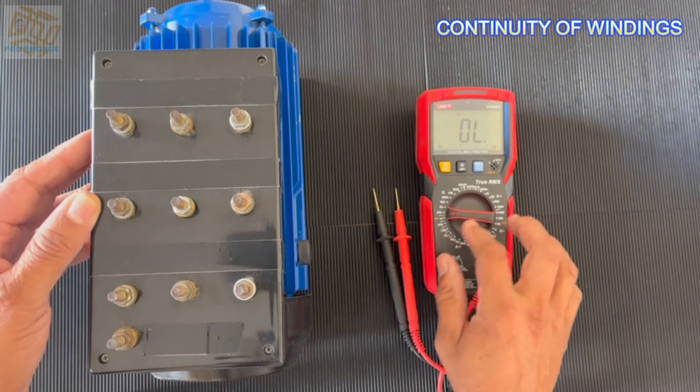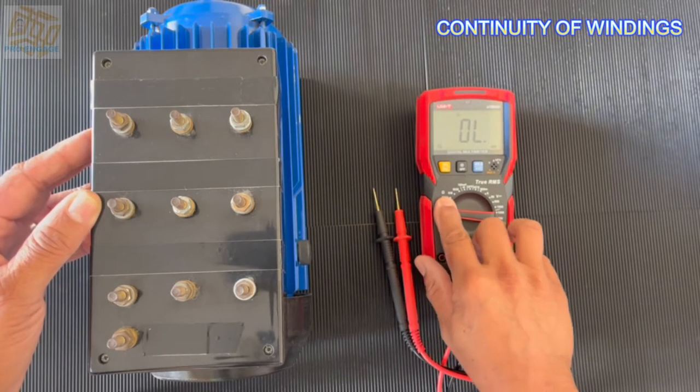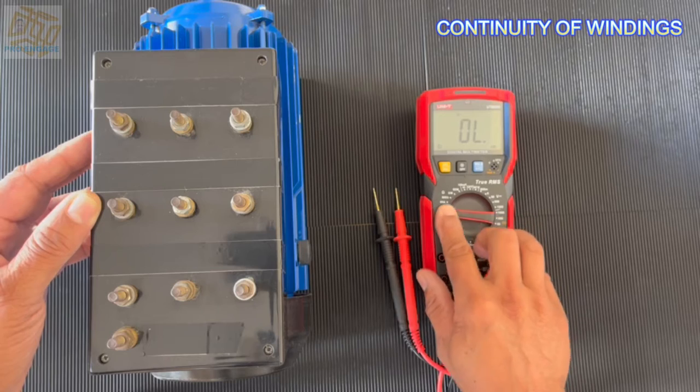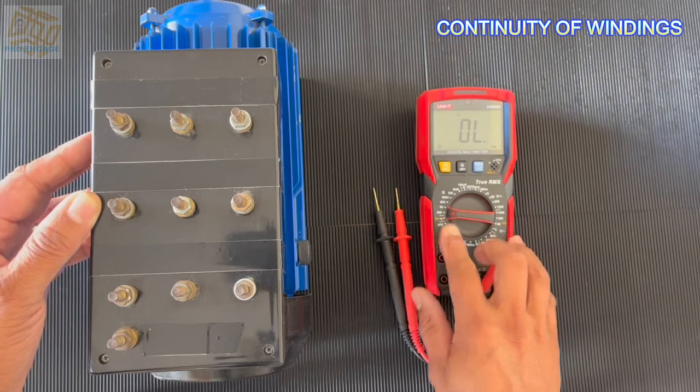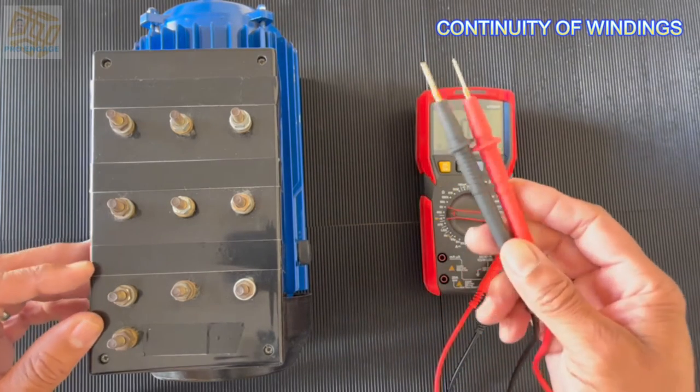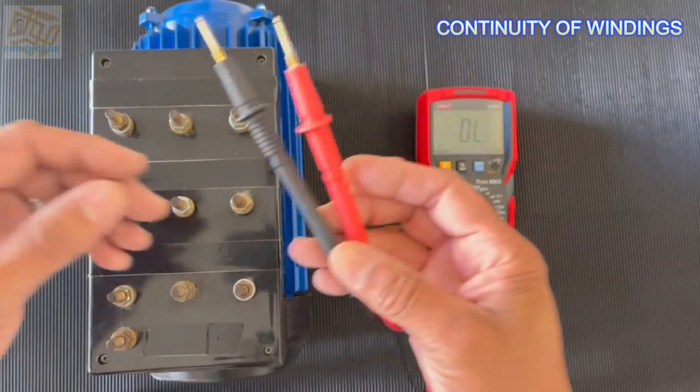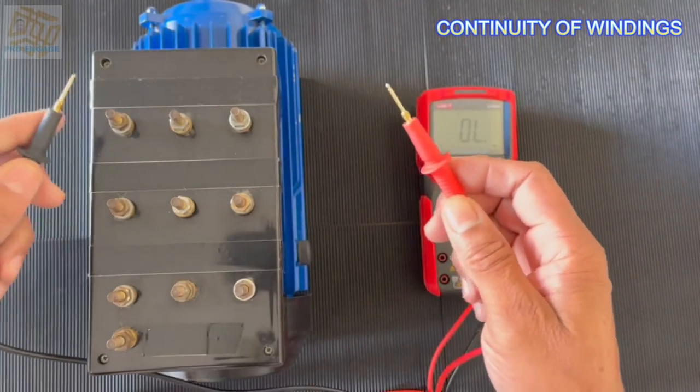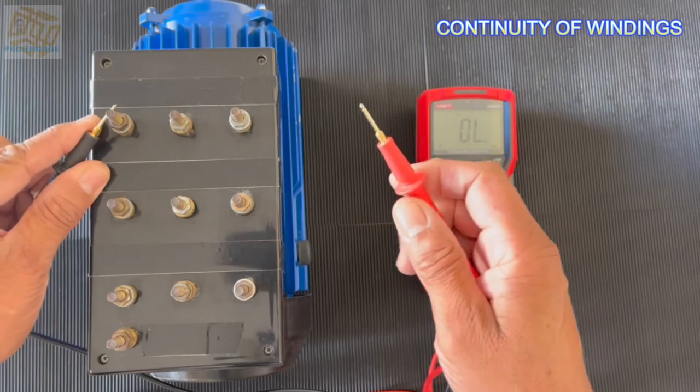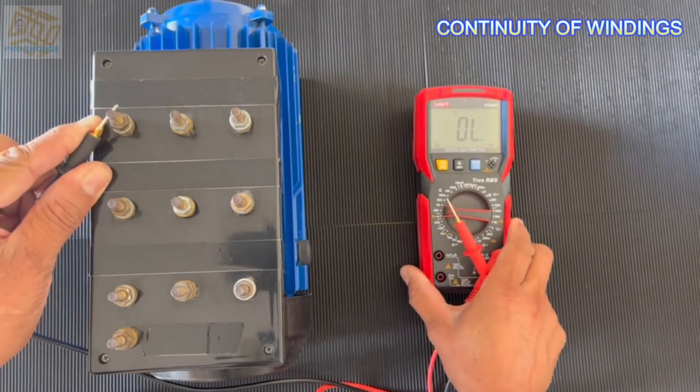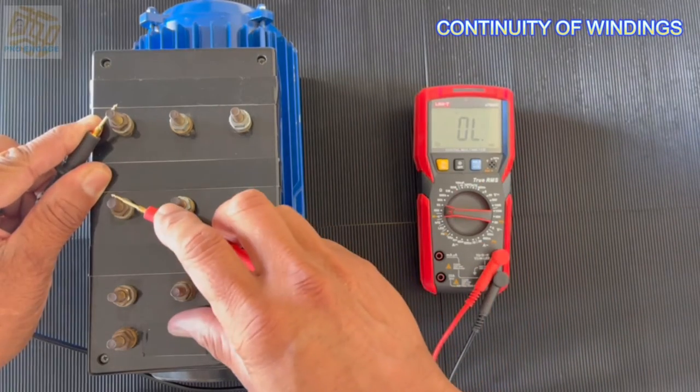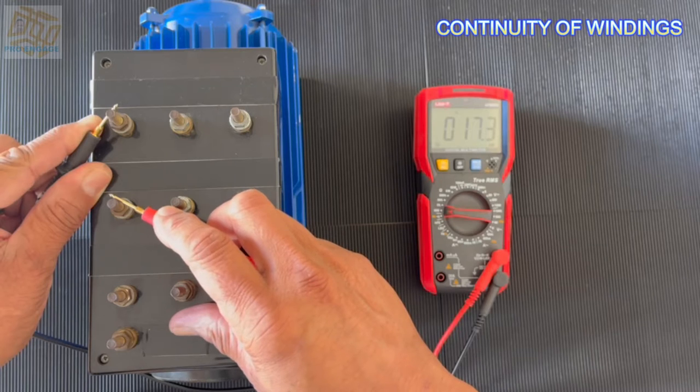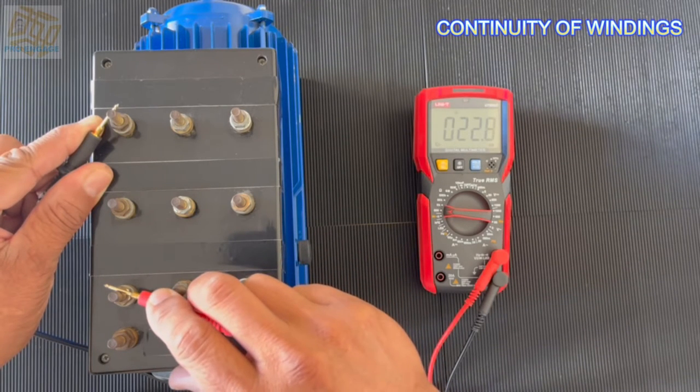I've got my multimeter ready and I've already selected the ohm scale, probably the lowest. If you have auto range, it's good. Generally you can put it on the 200 ohm scale, that's good enough. This multimeter has 600, so I'll start testing my terminals and see what I have.